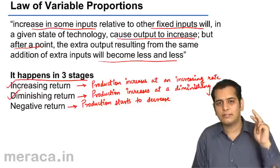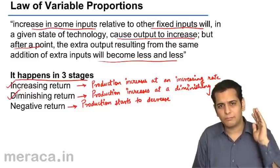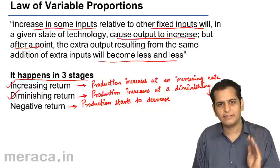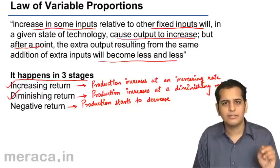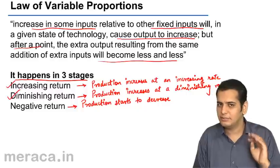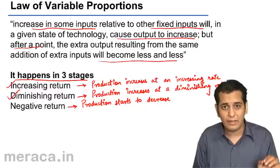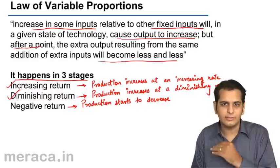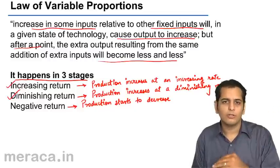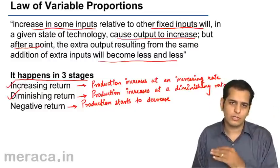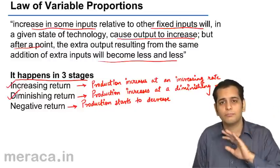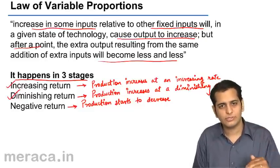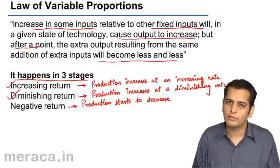Please note that in the first and second stages, production increases. However, in the first stage it increases at an increasing rate, and in the second stage it increases at a diminishing rate. Finally, in the third stage, production starts to decrease — it falls. This state is different from the first two, as in this stage production has altogether fallen.